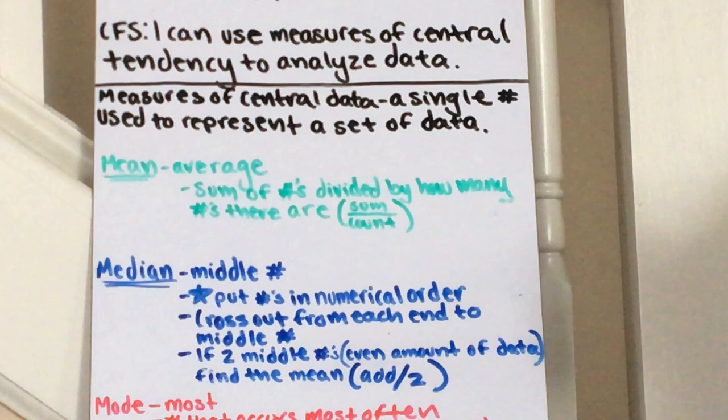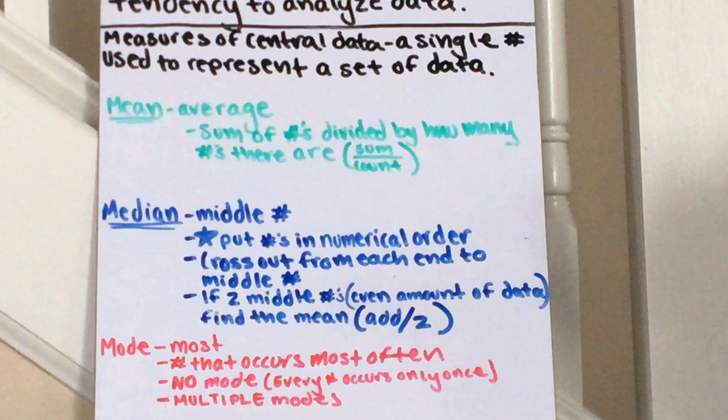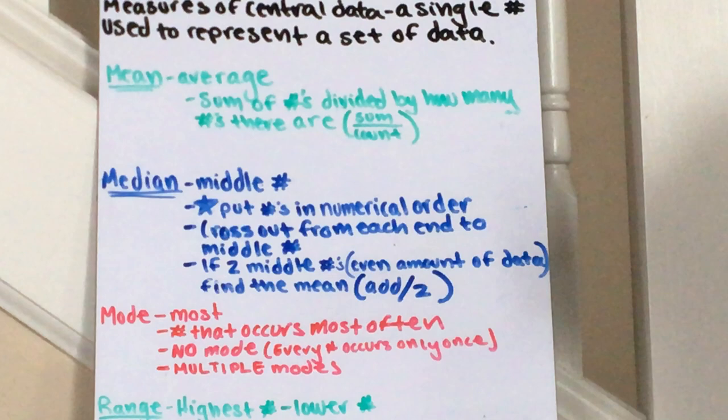Mean, median, and mode are all ways to measure the middle of a certain group of data. First of all, mean is average. We've talked about this in class. How do you find the average? You add all the numbers together and you divide by how many there are. Sum divided by count is the abbreviation for that.